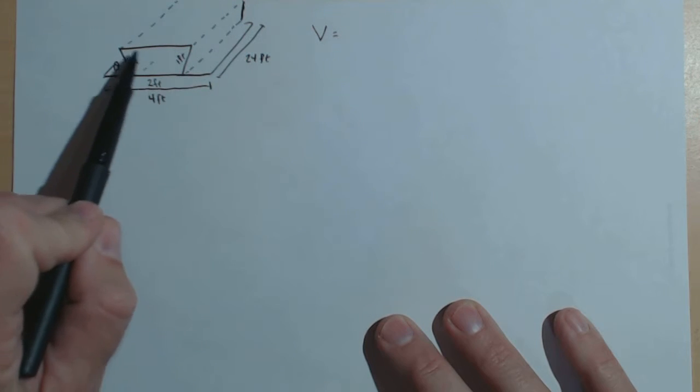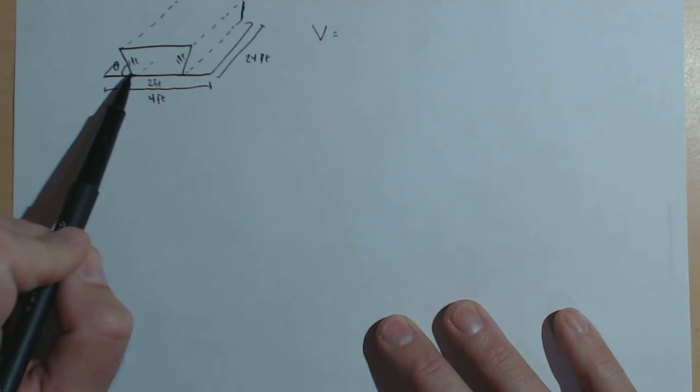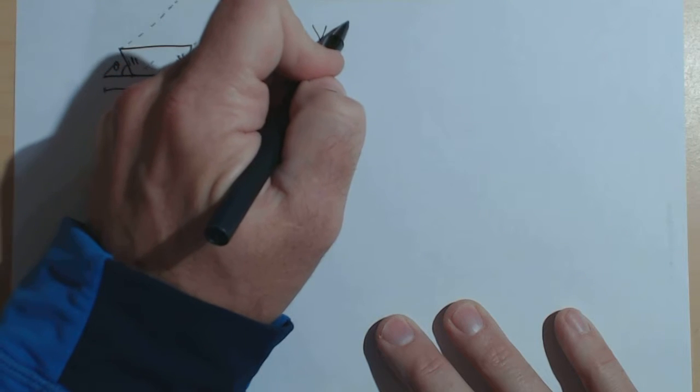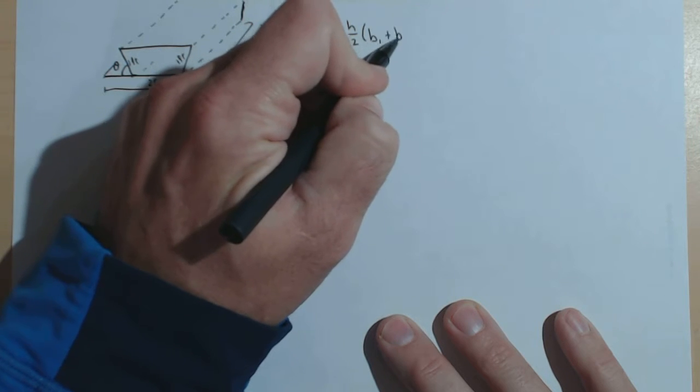It's going to be the area of the base times, we'll call it the depth or the length. Now, the area of the base is a trapezoid. Area of a trapezoid is the height of the trapezoid over 2 times base 1 plus base 2.